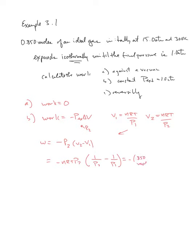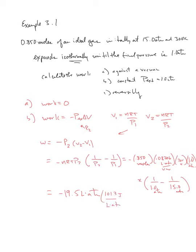I have a bunch of substitutions to make. 0.850 moles is what the n value is, the gas law constant that we're most familiar with, liter atmospheres per K mol. T is 300K and the final pressure is 1 atm. So that's the prefix part, and now I have the final pressure 1 over 1 atmosphere minus 1 over 15 atm. If I work that through, I get minus 19.5 liter atm. There's a conversion factor 101.3 joules per liter atm. I'm going to actually ask you to derive that, and I get a value of minus 1980 joules.